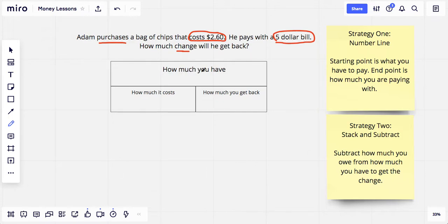So we can look at these numbers. We have the cost and we have how much he has and the number change. So how much you have, in this case, Adam has $5. How much does it cost? Adam's bag costs $2.60. How much do you get back? Well, this is the mystery number. This is the number that we are going to be finding out today.